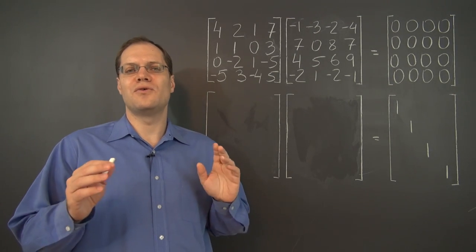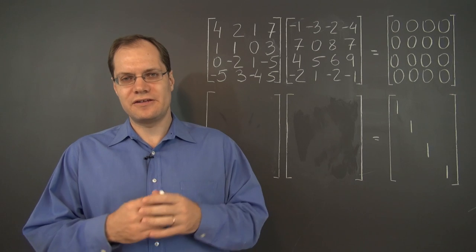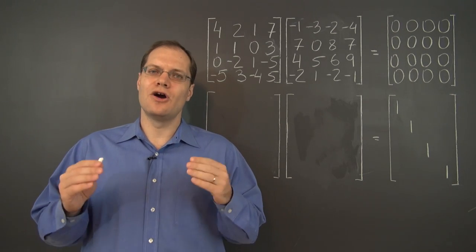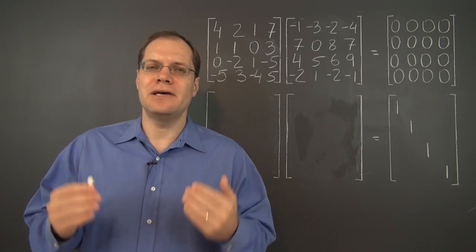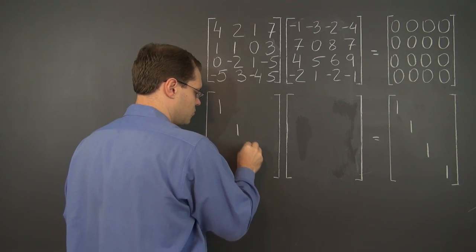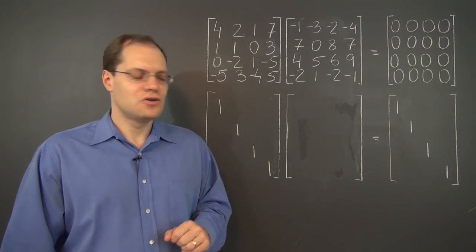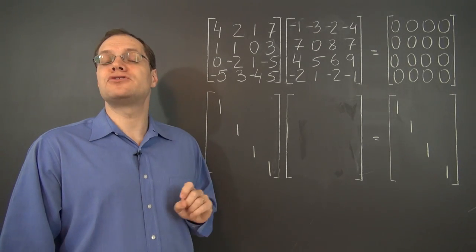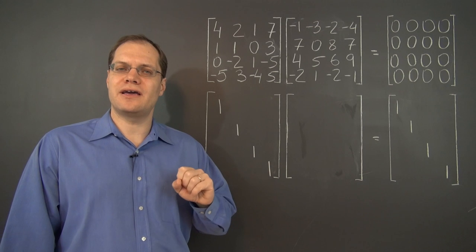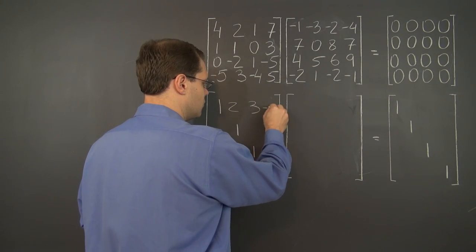All right. Here is one kind of matrix that's guaranteed to have an inverse with integer values. And to realize this, all you need to do is think about the matrix inversion algorithm. Let me put ones on the diagonal, which is always helpful. And just make it an upper triangular matrix. And I can put any integers here I want.